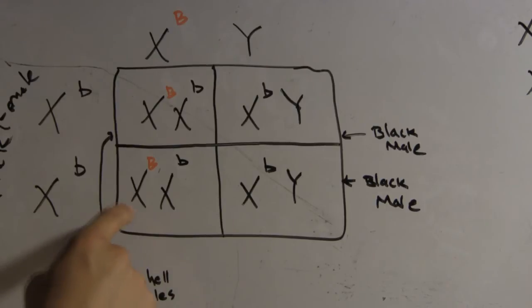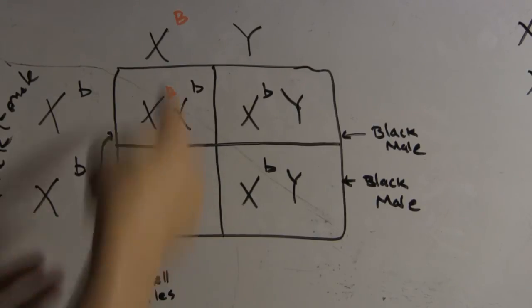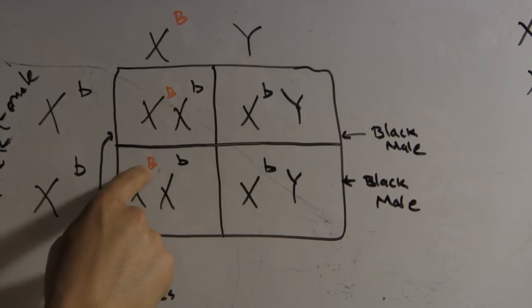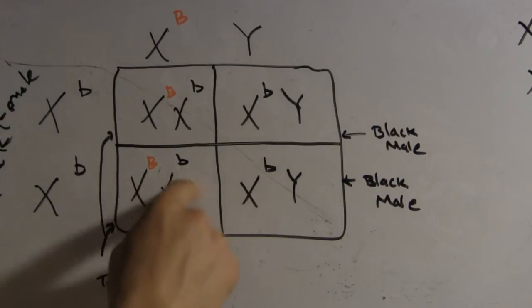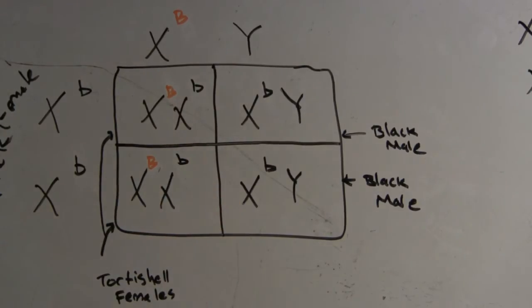In this case here, what you have is two females, XX, XX. They're both females. And the uppercase B stands for ginger. Lowercase b stands for black. Uppercase B, ginger is dominant. But in this case, in cat coat color and females, they're co-dominant. So both of these are tortoiseshell females.